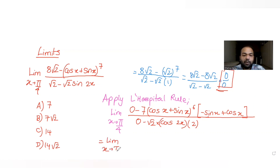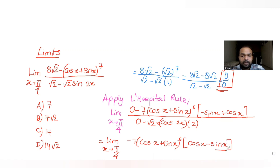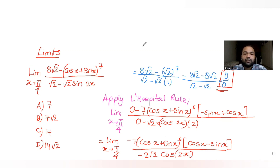After applying L'Hôpital's rule, the new limit as x → π/4 has numerator: −7·(cos x + sin x)^6·(cos x − sin x). Now substituting x = π/4: cos(π/4) + sin(π/4) = 1/√2 + 1/√2 = √2, so (√2)^6 ≠ 0, meaning this factor is fine.